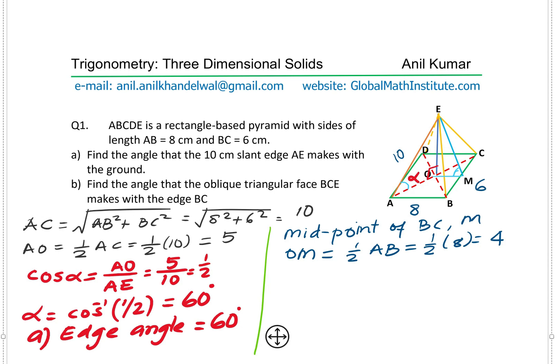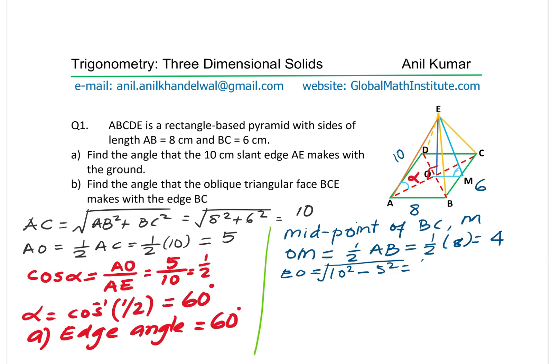To find the height EO, we use triangle EOA, which is a right-angle triangle. EO equals the square root of AE² minus AO², which is the square root of 10² minus 5², giving the square root of 75. Now we know EO and the base length MO equals 4, so we can find the angle using the tangent ratio.